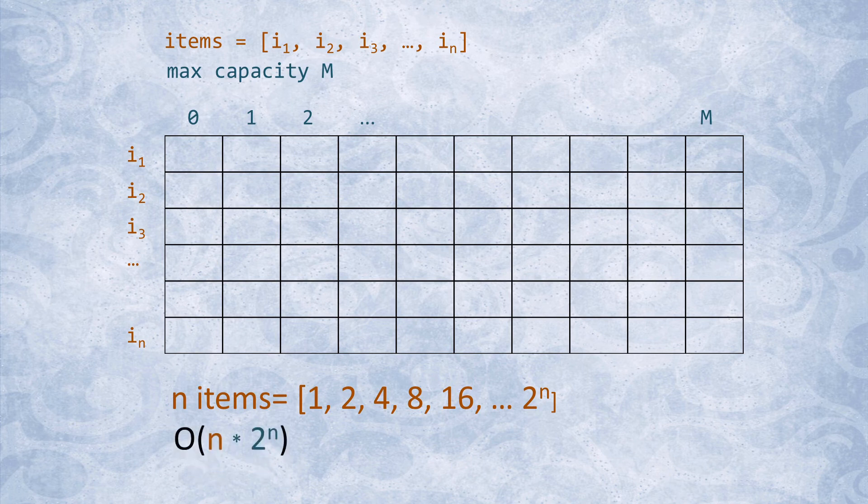In fact, you could pick the values to be exponentially larger in proportion to the size of the array, and then the algorithm would have exponential running time, just like the recursive function.